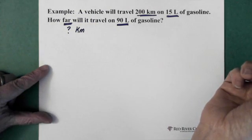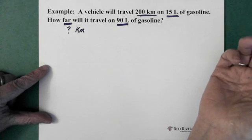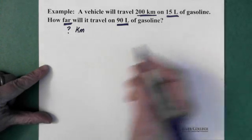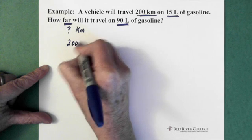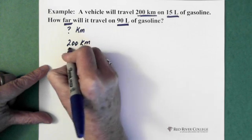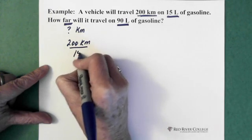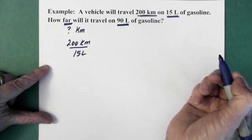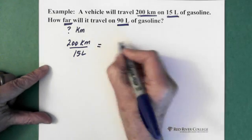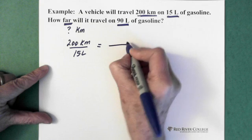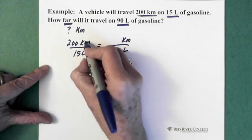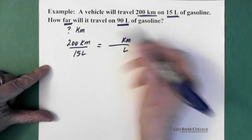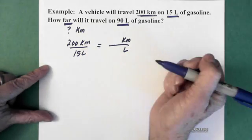So when you set up your ratio and proportion, it has to make sense when you set it up. So we know that there's 200 kilometers for 15 liters. And when you set this side up, it should be kilometers over liters. So the same setup that's here should be on this side.